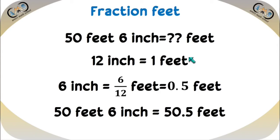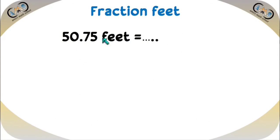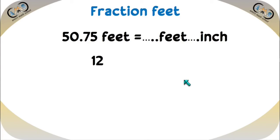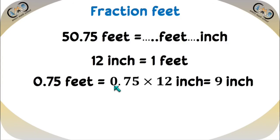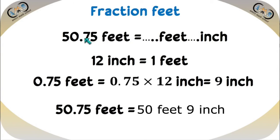So 50 feet 6 inches equals 50.5 feet. Conversely, 50.75 feet equals how many feet and inches? We know there will be 50 full feet. For the fractional part, 0.75 times 12 inches equals 9 inches. So 50.75 feet equals 50 feet 9 inches. To convert fractional feet to inches, multiply the fractional part by 12. Sometimes we need this type of conversion in land management.